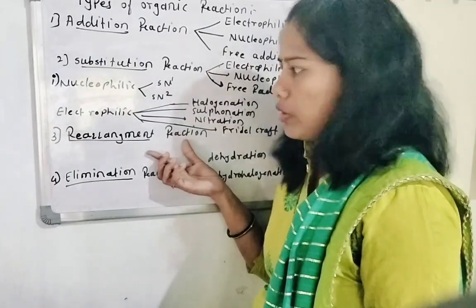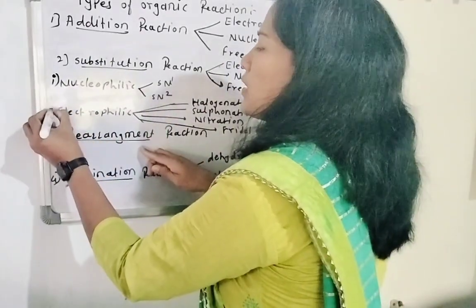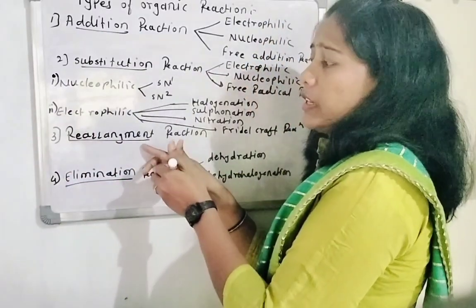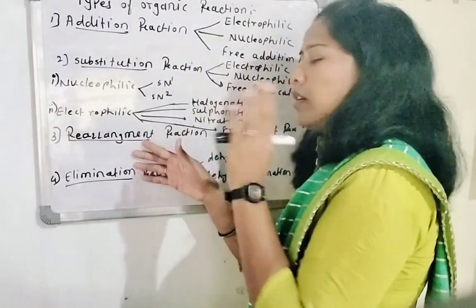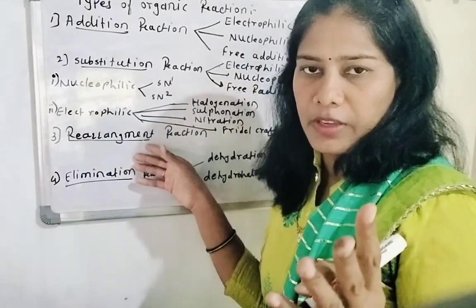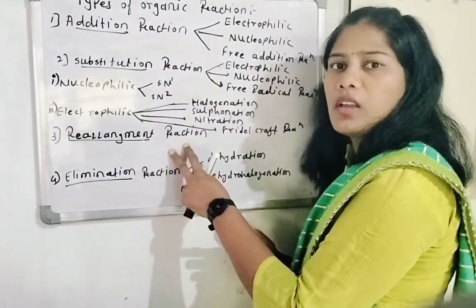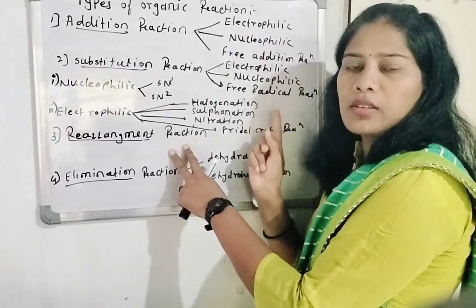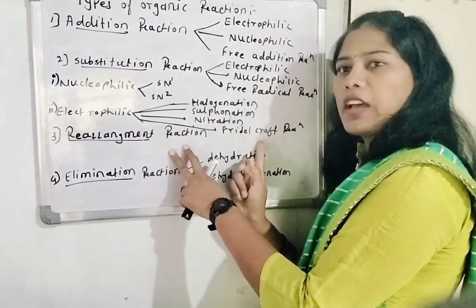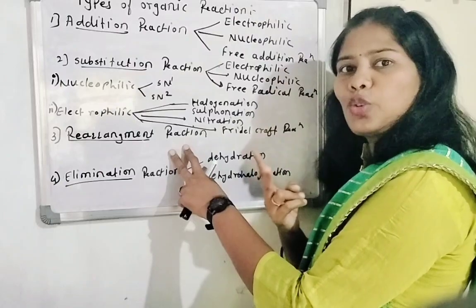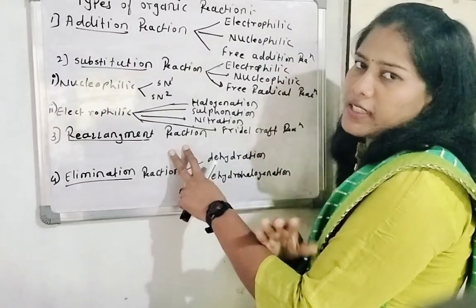SN2 is bimolecular. The second major type of substitution is the electrophilic substitution reaction. Electrophilic substitution has further sub-types: Halogenation, Sulfonation, Nitration, and Friedel-Crafts reaction — specifically Friedel-Crafts acylation and Friedel-Crafts alkylation.